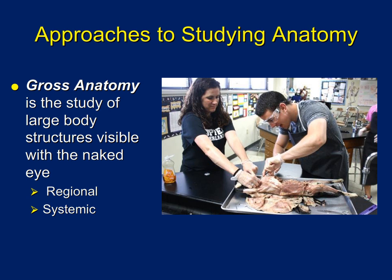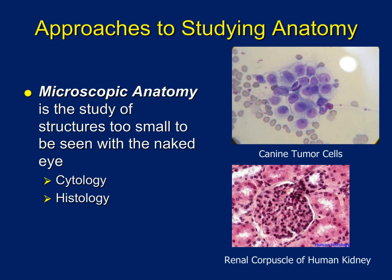Another approach to studying anatomy is microscopic anatomy, or microanatomy. As the name implies, this is something we observe with a compound microscope or even an electron microscope. Microanatomy can be divided into cytology — the study of cells — and histology — the study of tissues. For example, as future vet techs and assistants, some of you will look at cytology from the ears of cats and dogs. If a dog has been itching its ear, you'd take a swab, put it on a microscope slide, stain it, and see what's visible — yeast or bacteria, for instance. That's a cytological observation.